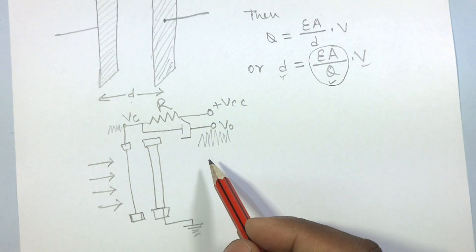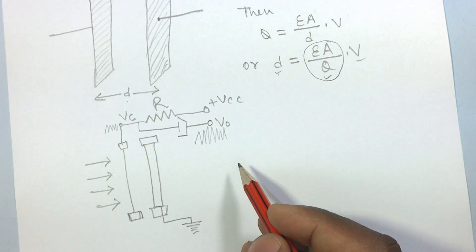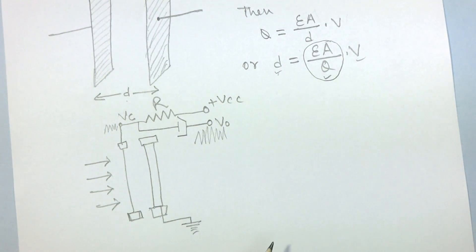There is another form of condenser microphone known as an electret microphone. Let us draw the construction of the electret microphone.